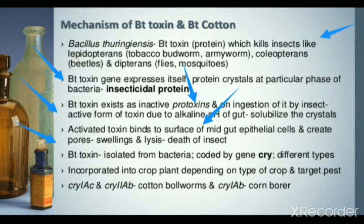BT toxins are isolated from bacteria. The gene which codes for them is called cry gene. Cry proteins have crystal-like structures and so are called crystal proteins. The cry gene produces a harmful substance for larvae. We then incorporate this into crops so that the harmful insect structure cannot form harmful activity.